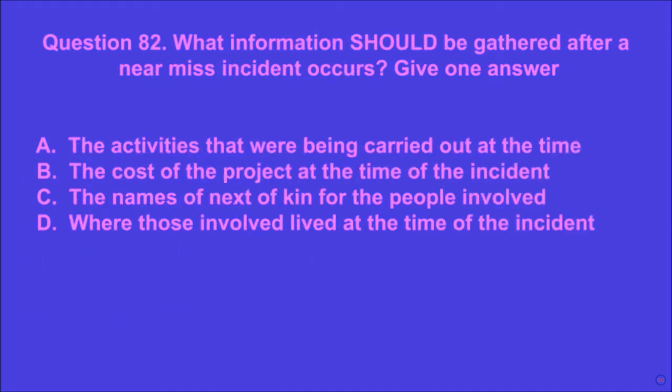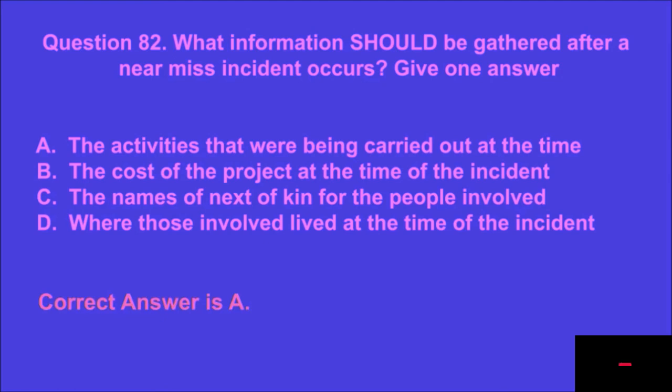Question 82: What information should be gathered after a near miss incident occurs? Give one answer. A: the activities that were being carried out at the time, B: the cost of the project at the time of the incident, C: the names of next of kin for the people involved, D: where those involved lived at the time of the incident. A is the correct answer.